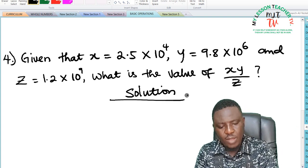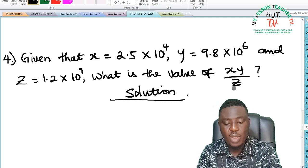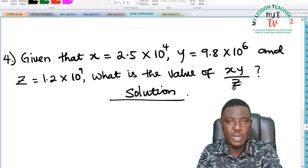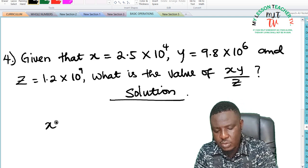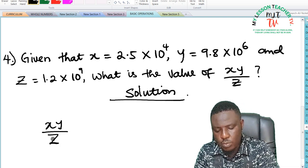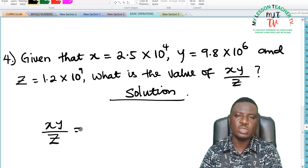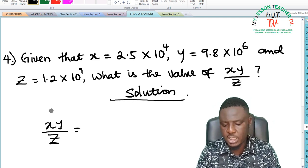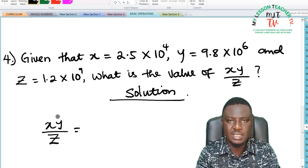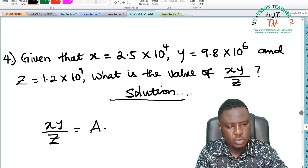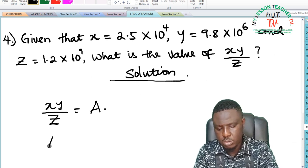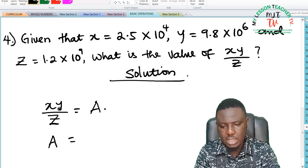Solution. We have been given the values of x, y and z and we are asked to find the value when you multiply x by y and divide the result by z. So we have xy divided by z will be equal to, I'm going to substitute the values for x, y and z in this expression and simplify. Let the answer be equal to, let's say A.